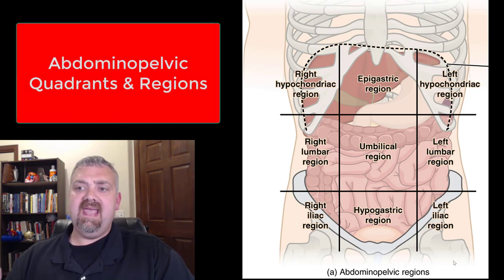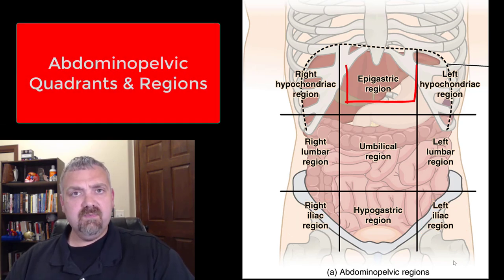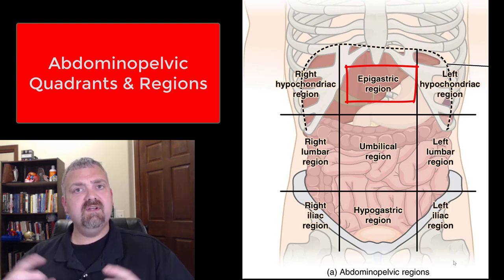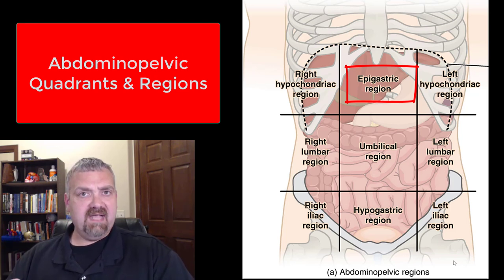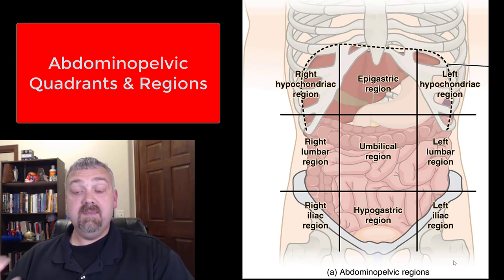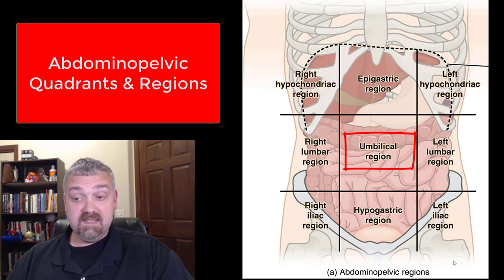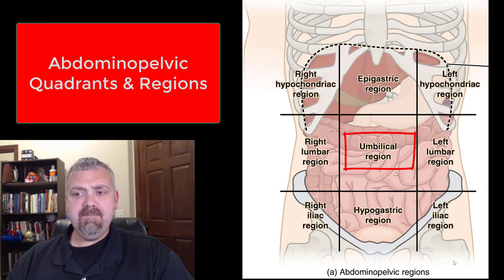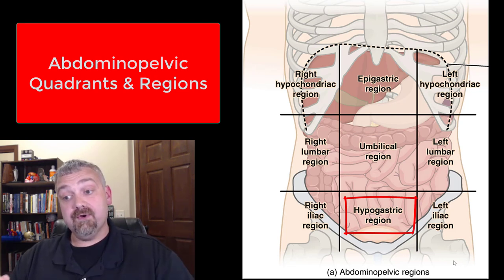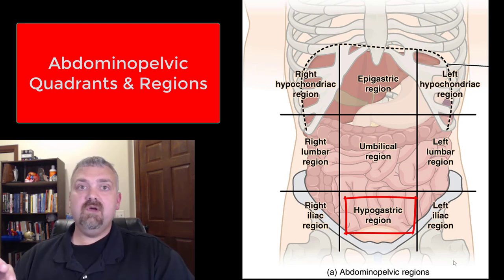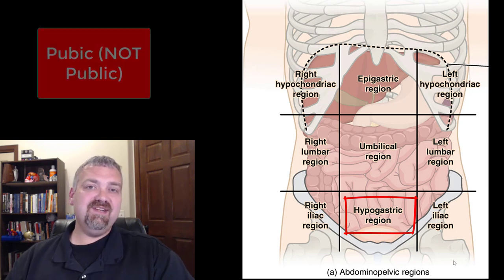Going down the middle: the epigastric region — 'epi' means above and around, and 'gastric' means stomach, so epigastric means above and around the stomach. Then we have the umbilical region, right around where the umbilicus is — your belly button. And then the hypogastric region, which means below or under the stomach. The other term that can be used here is the pubic region.